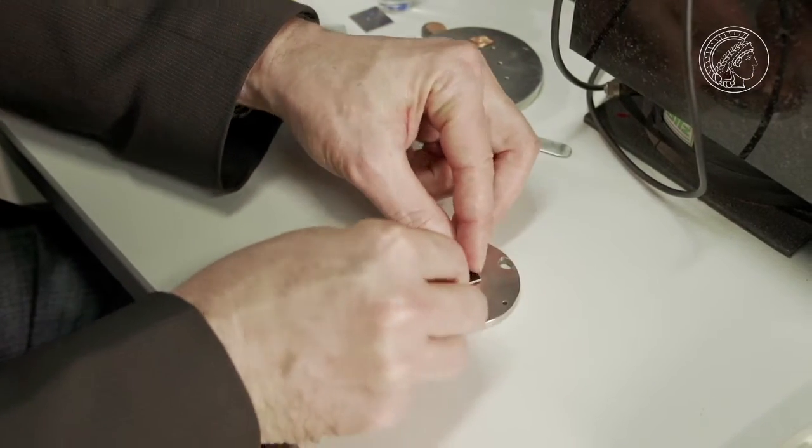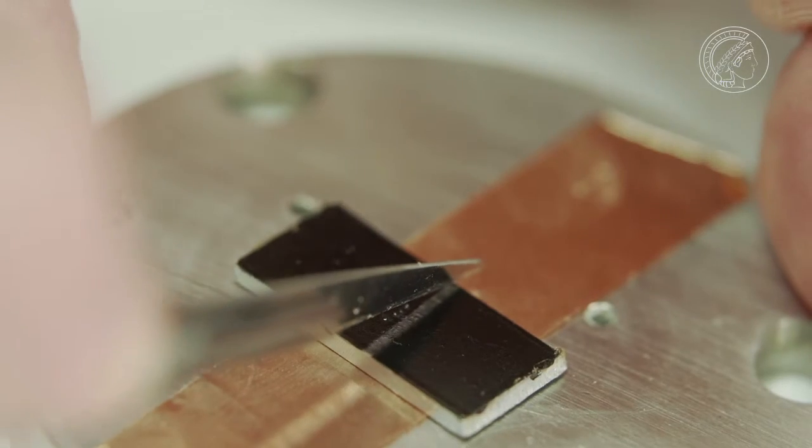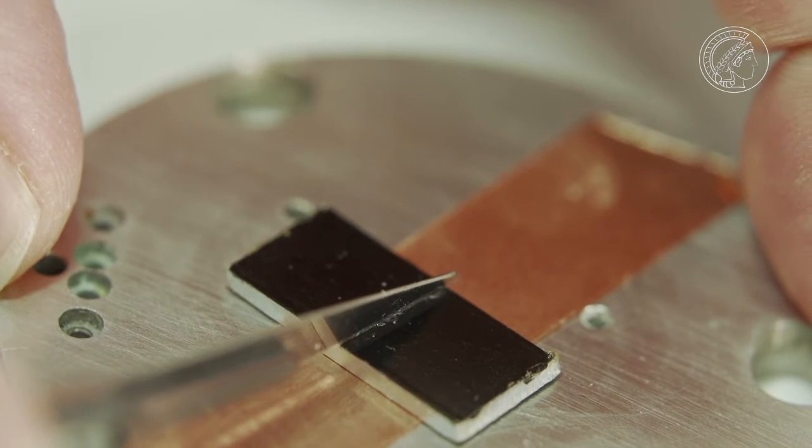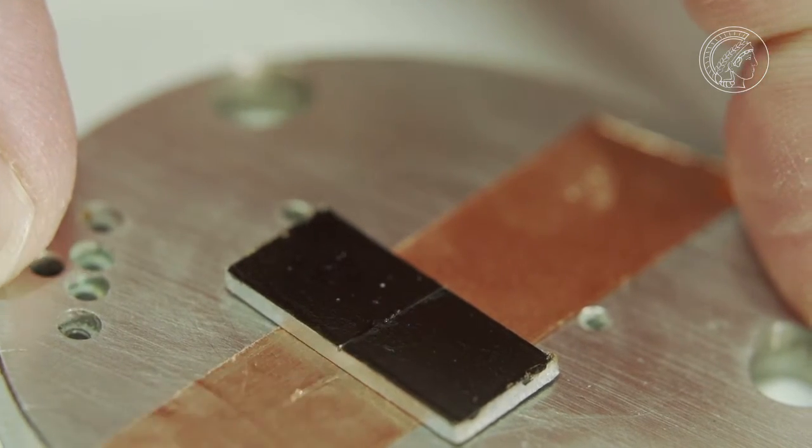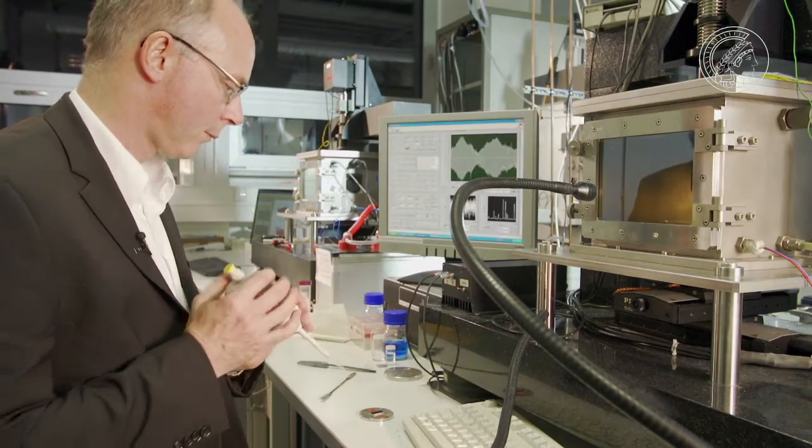But what happens when the layer of varnish and even the zinc beneath it get a deep scratch? Then the steel is no longer protected from water and oxygen. So now the corrosion can eat into the metal, even underneath the varnish.